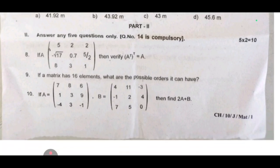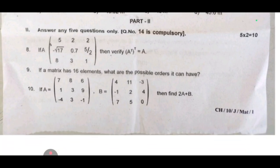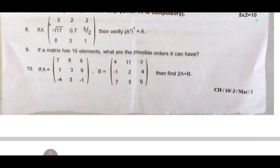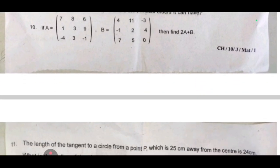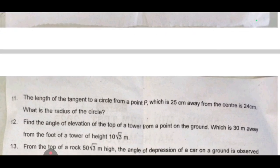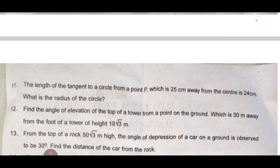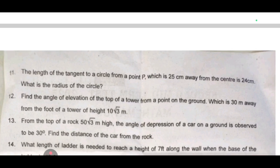9th one: if A matrix has 16 elements what are the possible orders it can have? 10th one: if A equal to B equal to find 2A plus B. Next 11th one: the length of the tangent to a circle from a point P which is 25 centimeter away from the center is 24 centimeter, what is the radius of the circle?